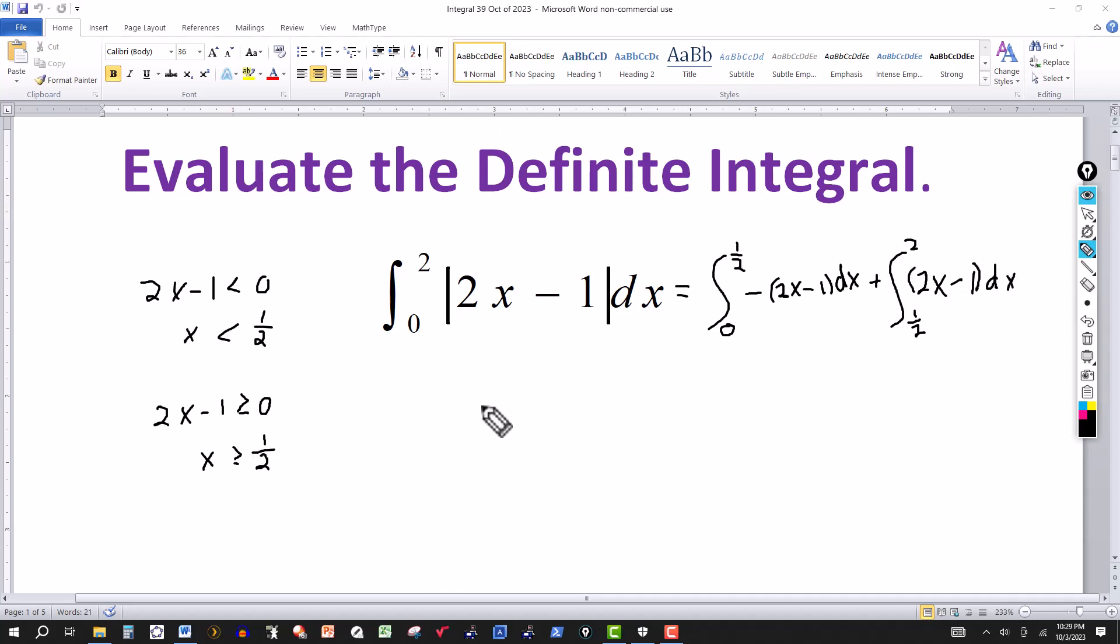Now I'm ready to integrate. I'll multiply through by the negative and then integrate. So be minus 2x, integrate, add 1 to the exponent and divide, so that'll be minus x squared. This would be minus minus 1 is plus 1, integrate with respect to x that'll be x. So I get minus x squared plus x. The limits for the first one are from 0 to 1 half. And for the second one, integrate again, that'll give me x squared minus x, and the limits on this one are from 1 half to 2.